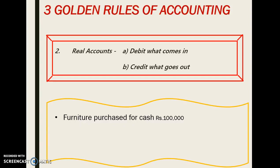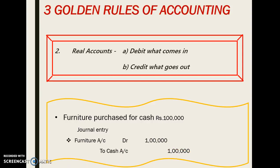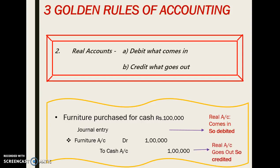Let's see one example: furniture purchased for cash, rupees 1 lakh. Journal entry — furniture account debit, to cash. Furniture is a real account and it comes to our business, so we debit the furniture account. Cash account is also a real account and cash is paid so it goes out, so cash account is being credited.